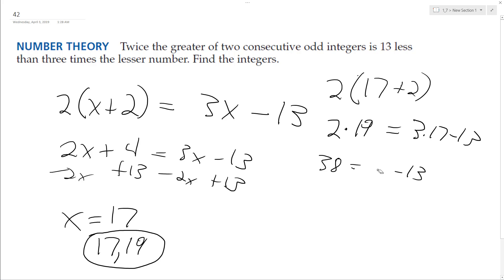Actually that's not right, that should be 51. So 38 equals 38. All right, so 17 and 19 are the two consecutive odd integers.